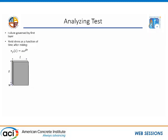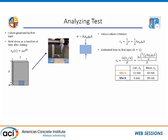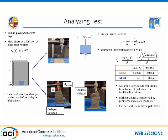With that yield stress data, we can apply some analysis. At very early ages, before the buckling effect sets in, we can try to estimate the number of layers or the time to first failure — this gives us the stress applied to the first layer as related to the yield stress. For mixtures A and B, we calculate a printable time of 11 minutes, but for mix A we weren't actually able to print until 50 minutes, and for mix B it took about 30 minutes. As hydration continues, this type of analysis becomes less important and we need to account for buckling behavior instead.